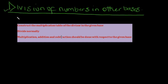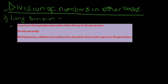Division of numbers — there are two methods of doing this. We can use the long division method, just like we do in normal base 10 numbers, or we can use the stepwise conversion method, which we'll do in another video. That method involves conversion from the given base to base 10 before doing the division. Let's focus on the long division method. This involves: first, constructing the multiplication table of the divisor in the given base; and second, dividing normally, keeping in mind that multiplication, addition, and subtraction should be done with respect to the given base.